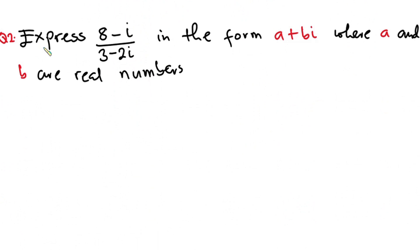Now the second question is, express 8 minus i over 3 minus 2i in the form a plus bi where a and b are real numbers. So we are going to express this fraction involving complex numbers in this form in such a way that a and b are real numbers. So let's start.